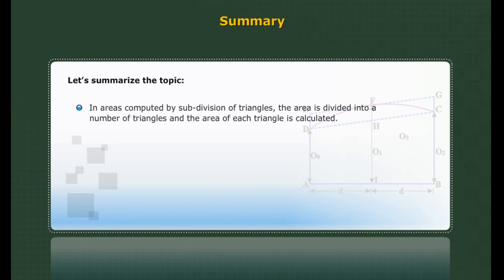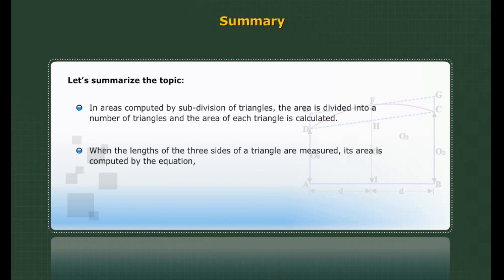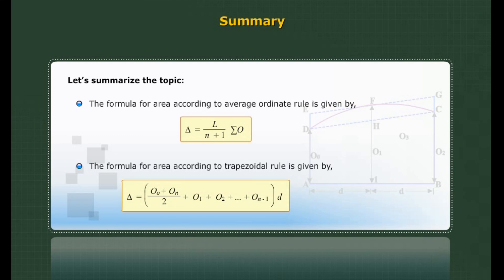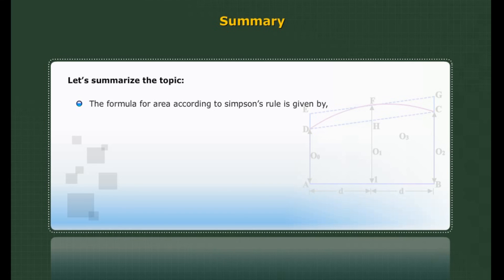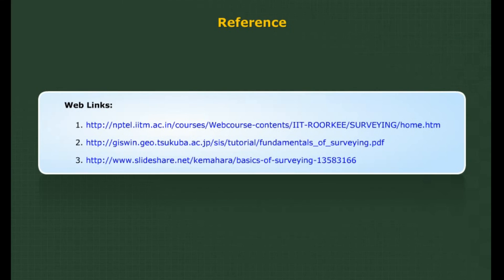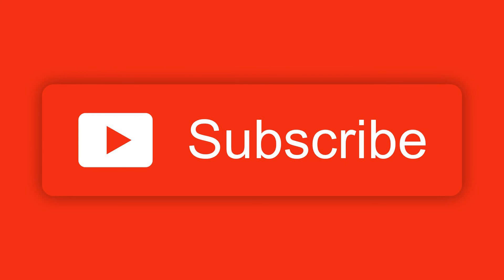Summary: In areas computed by subdivision of triangles, the area is divided into a number of triangles and the area of each triangle is calculated. When the lengths of the three sides are measured, its area is computed by the standard equation. The formula for area according to the average ordinate rule, the trapezoidal rule, Simpson's rule, and offsets at regular intervals are each given by their respective equations.